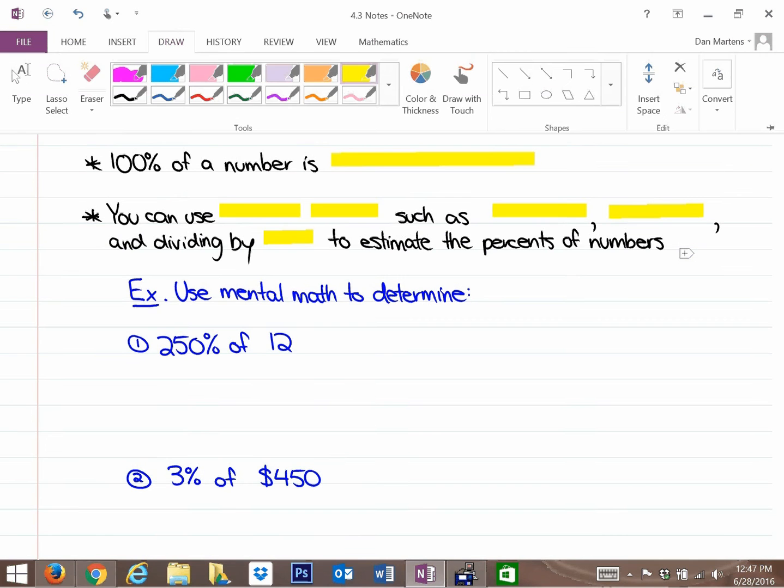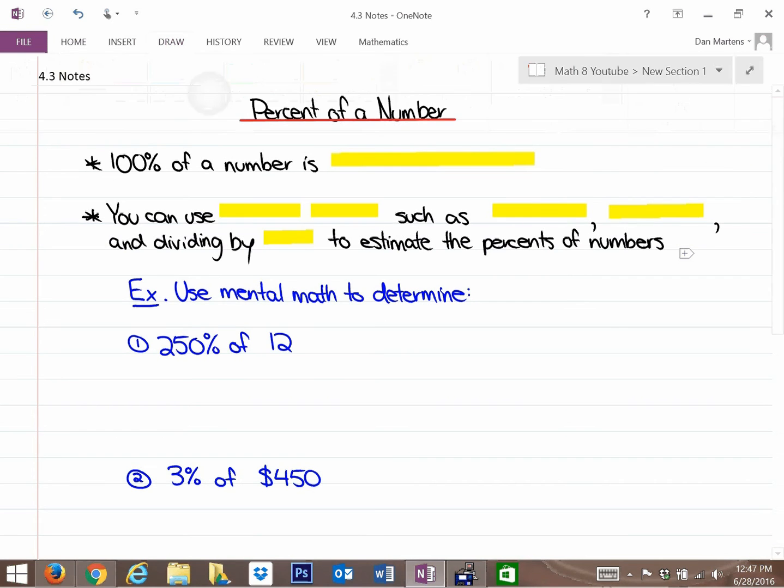Where this section starts is understanding what 100% of a number is. So 100% of a number is the number itself. What I mean by that is saying 100% of 25 is 25, 100% of $4 is $4, 100% of 6 feet is 6 feet, 100% of 12 million is 12 million. So 100% of a number is the number itself.